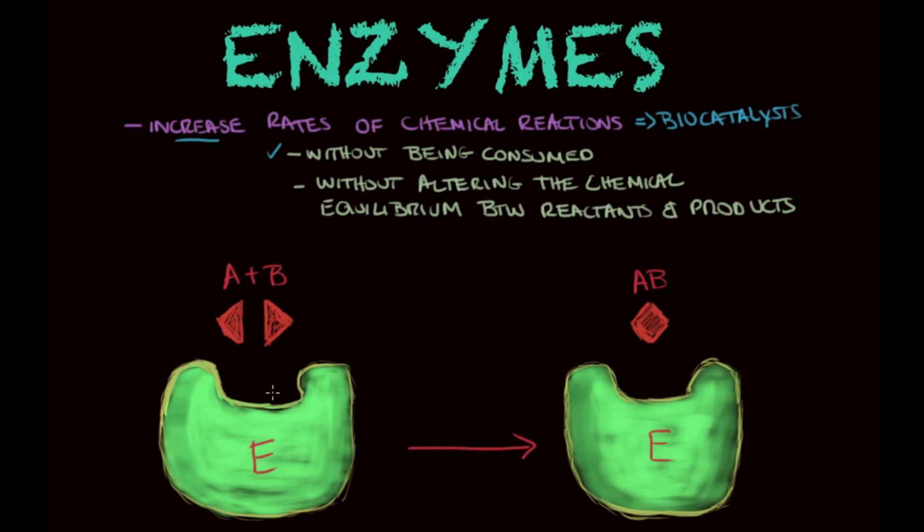Now, one thing that happens, though, is that this increase in the rate of reactions is done without the enzyme being consumed. So if we introduce an enzyme in a reaction to speed it up, there will be no change in the number of enzymes. So if we start with 100 enzymes in the beginning, we will end with another 100 enzymes.